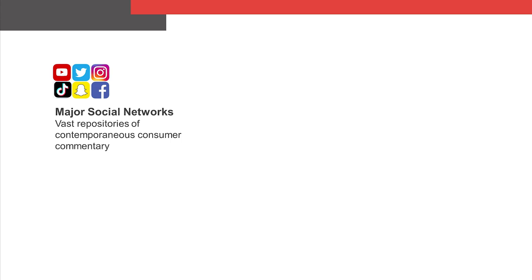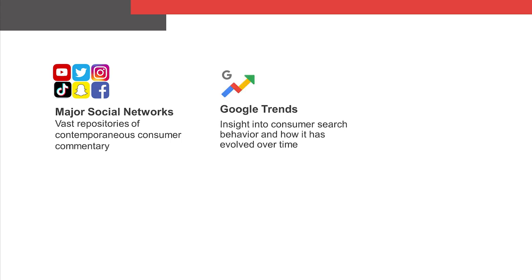Another important source of data comes from Google. Data from Google Search and Google Analytics can offer unique insights into how consumers act online. Google Search data is best accessed through Google Trends, which is a valuable resource for measuring the relative volume of a search term over time and comparing it to other terms. It provides insight into topics by tracking their prominence and listing other topics they are related to.